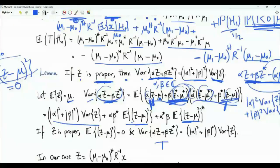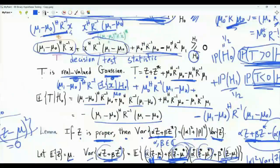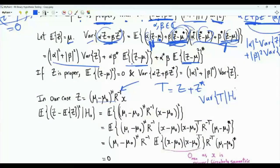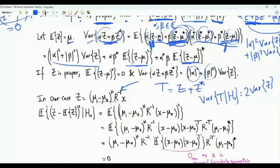In our problem, the decision statistic T equals Z plus Z conjugate plus constants, so alpha equals 1 and beta equals 1. The constant terms do not contribute to the variance. Thus, the variance of T given H0 equals 2 times the variance of Z — but only if Z is proper. We need to verify this.